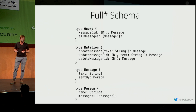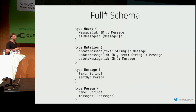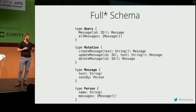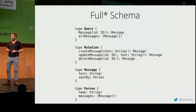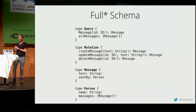The full schema defines an API that allows creating, updating, and deleting messages — essentially a CRUD API for the Message type. This serves as a good example to understand how to write a GraphQL schema so that the expected capabilities of your API are properly exposed.